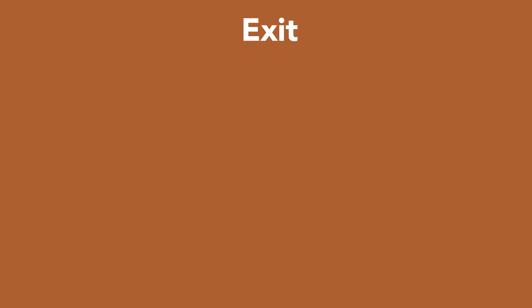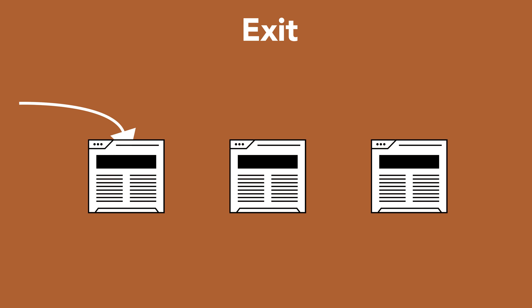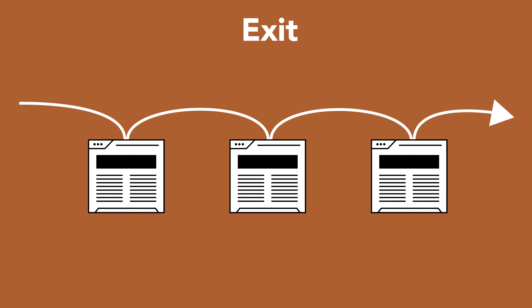An exit, on the other hand, is counted whenever a page is the last page in a user's visit. In our ball analogy, rather than only that single hit interaction of a bounce, imagine instead that the ball landed and rolled around various parts of the table for a while until it eventually dropped off. On a website, this would look like a user landing on the site, navigating to a few other pages, before then leaving the site. Whatever that last page was on the site will get counted as their exit page.